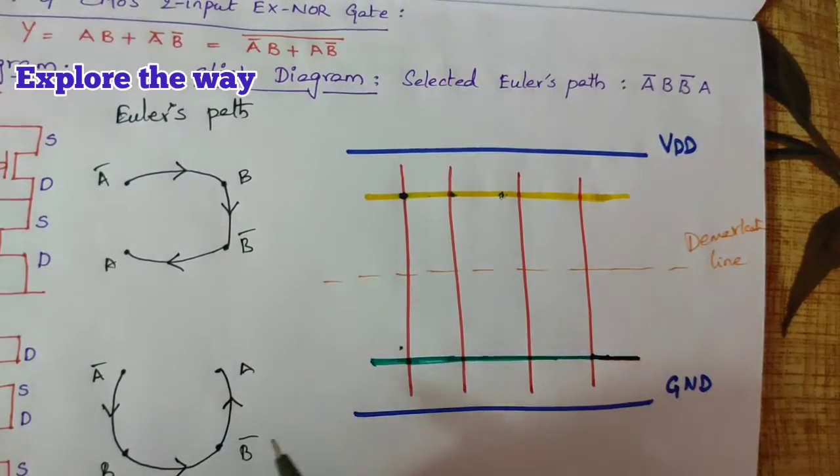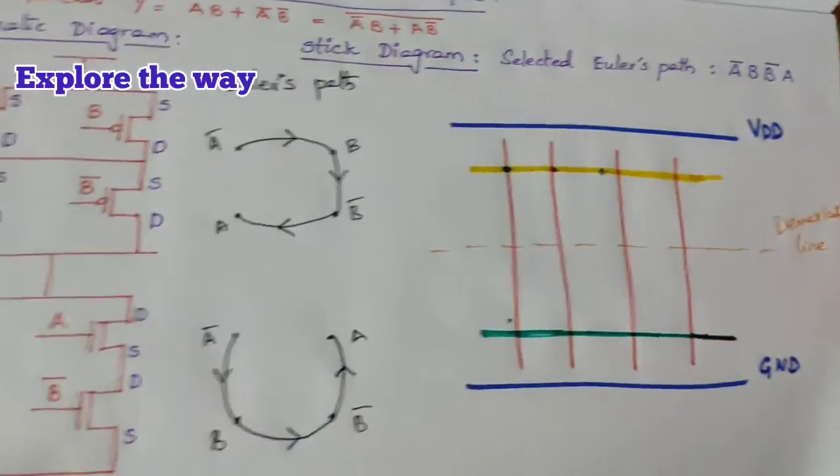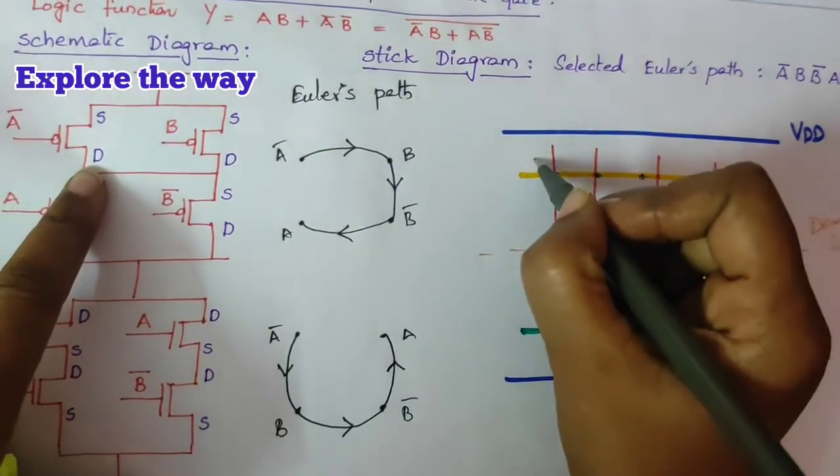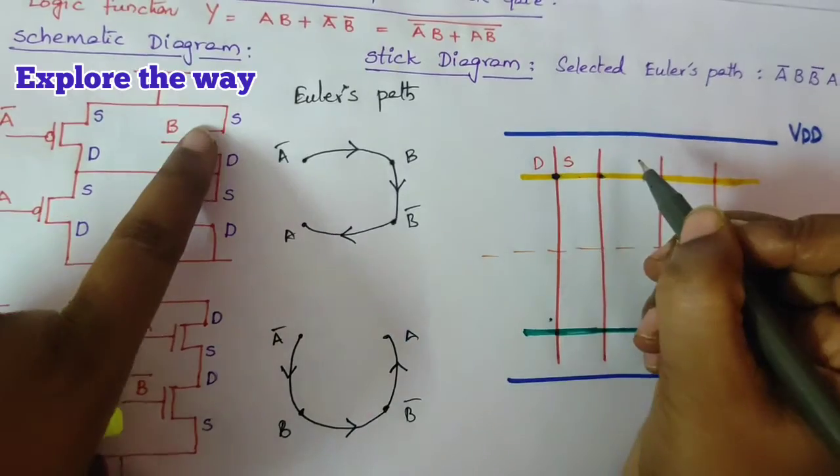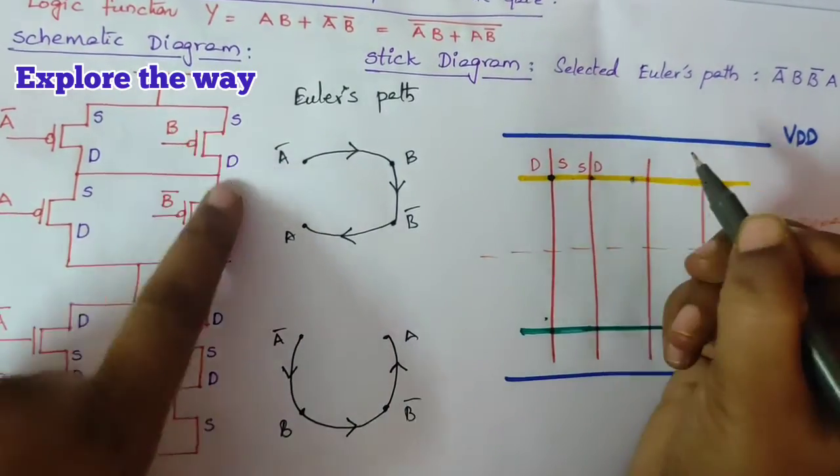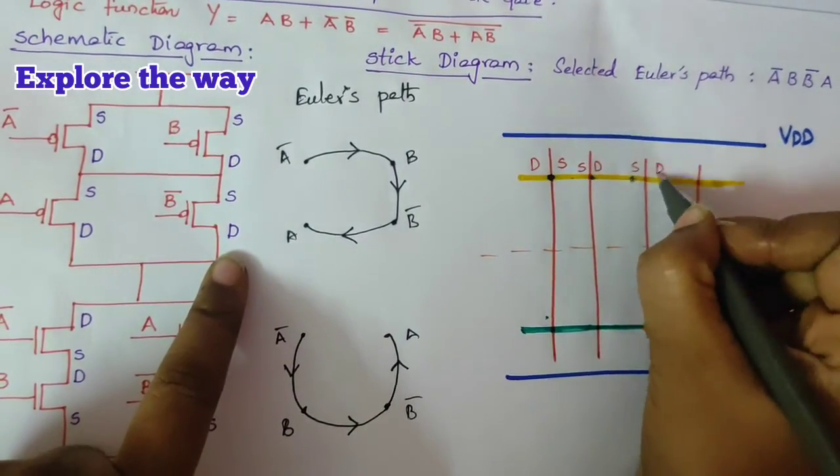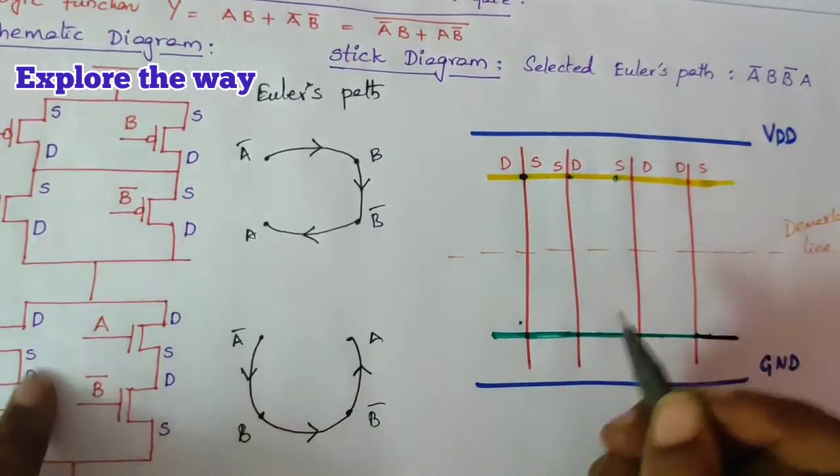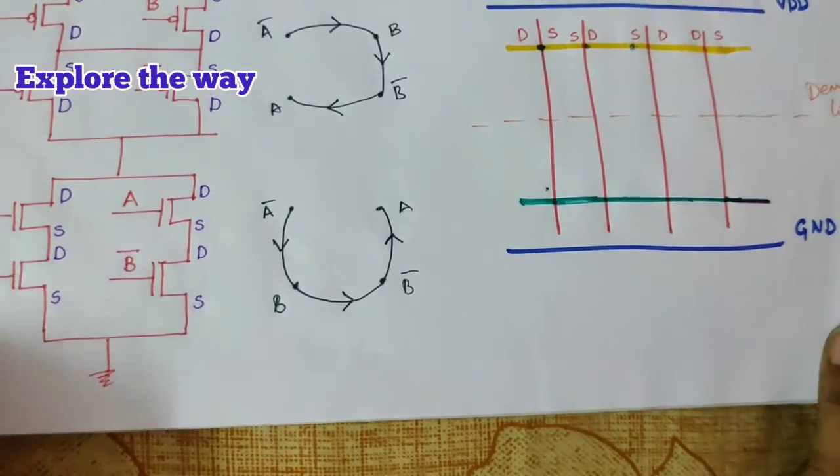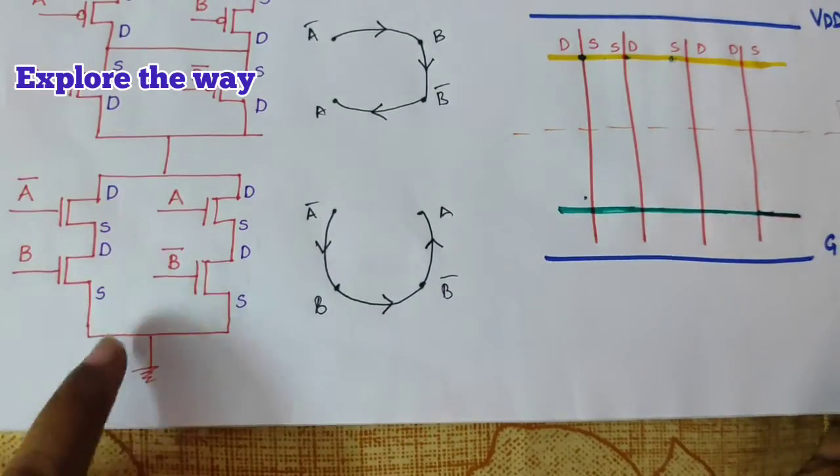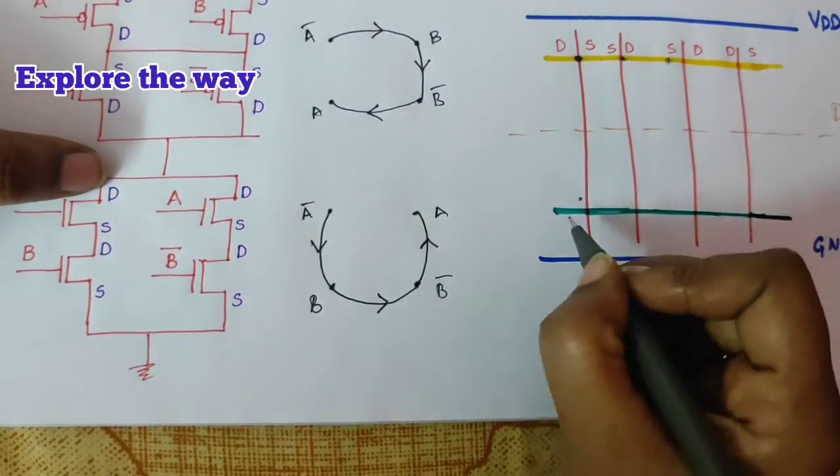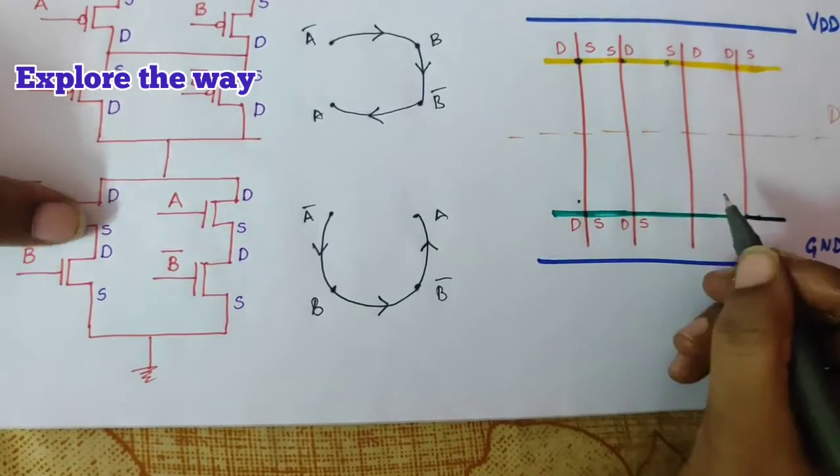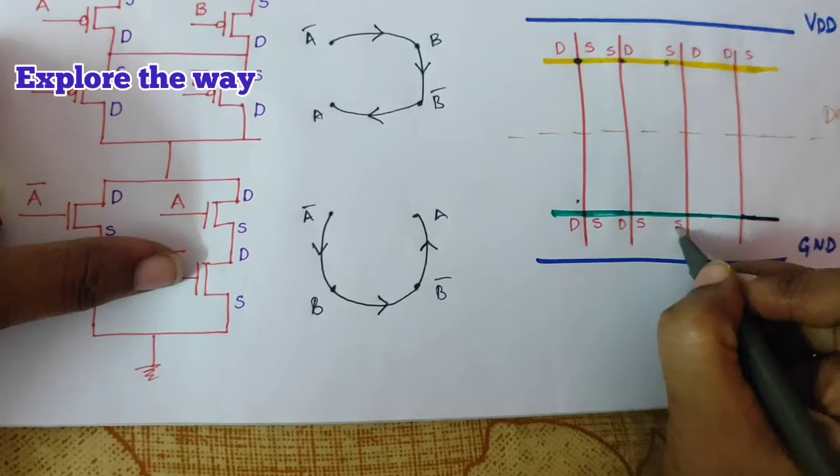Label source and drains. Start from a bar. Here, drain source. Source drain. Source drain. Drain source. In the same path, place the source and drains. First, start from a bar. D, S, D, S, S, D.